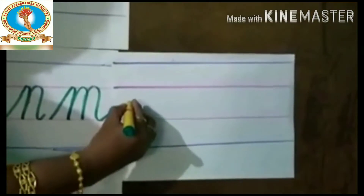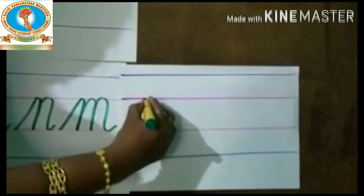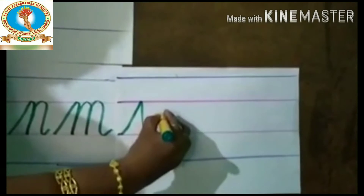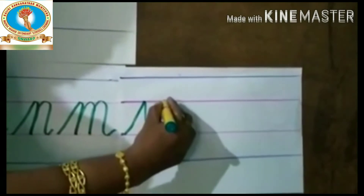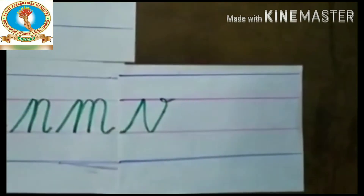Go up, press the second line, again come down, press the third line, and small loop. V.